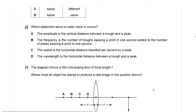The next question is question number 22 of October/November 18, variant 2. Which statement about a water wave is correct? Option A: the amplitude is the vertical distance between a trough and a peak. This is not the right statement because the distance between a peak and trough is twice the amplitude, not the amplitude itself. So option A is incorrect.